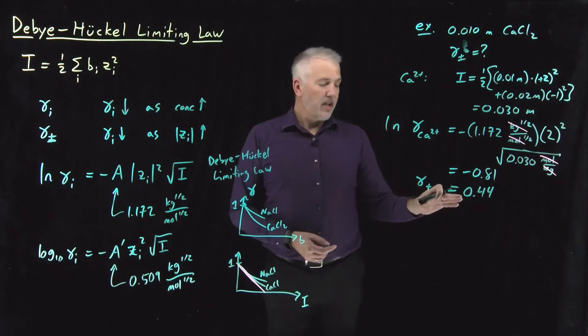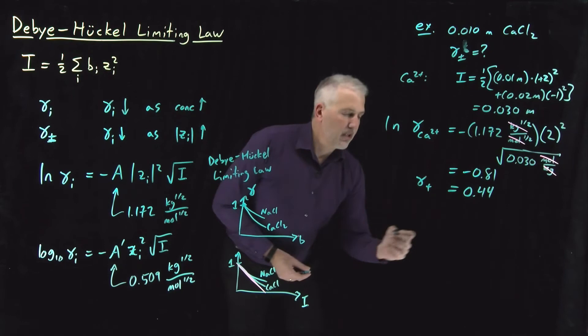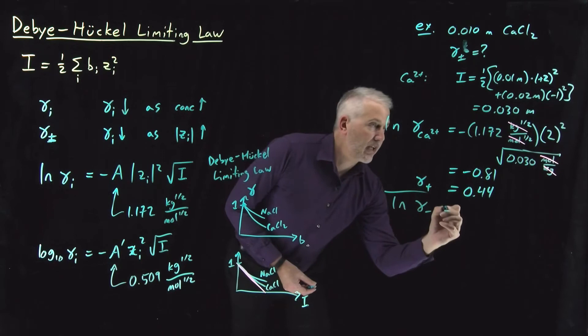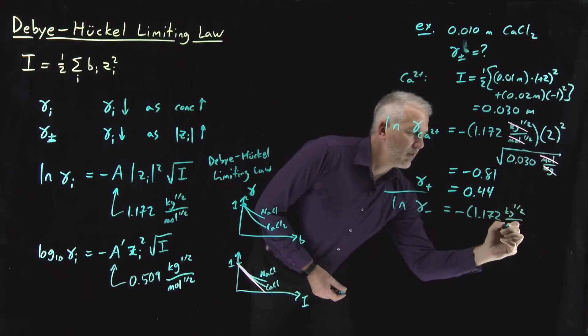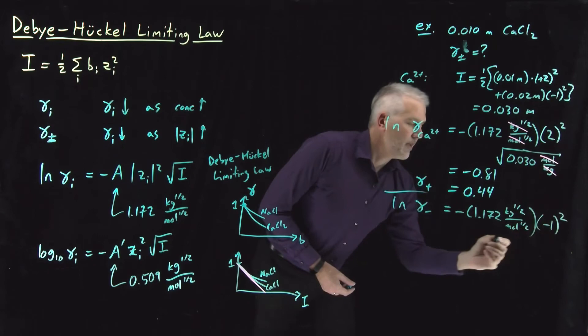So we see that our cation, the calcium cations, have an activity coefficient of 0.44, as predicted by the Debye-Huckel limiting law. If we do the same thing now for the anion, our chloride anion, the charge is different, that's negative 1.